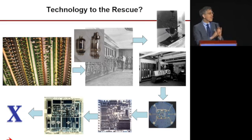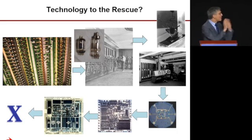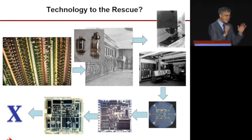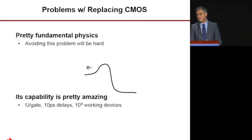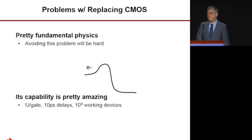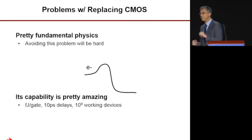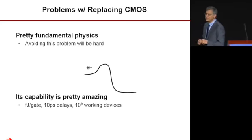You read every week about some new technology that's going to make computing better. Unfortunately I am not optimistic that we're going to find a technology to replace CMOS for computing. I think this comes down to two fundamental problems: one technical and one economic.